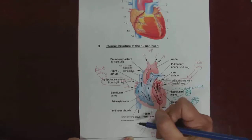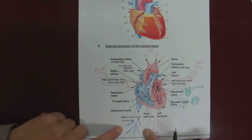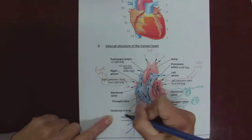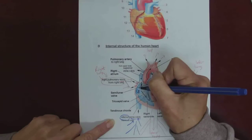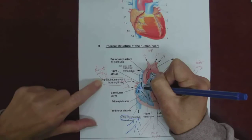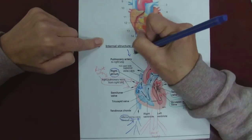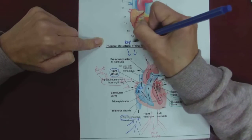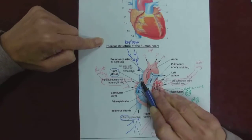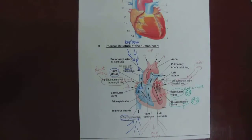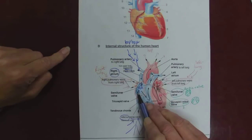Deoxygenated blood from the lower part of the body — all those veins are going to join. Here is the inferior vena cava, the lower big vein, and that opens up into the right atrium. At the same time, deoxygenated blood coming back from the top of the body — lots of veins join and become the superior vena cava — bringing blood back from the top of the body. That blood also drains into the right atrium.